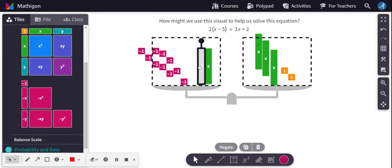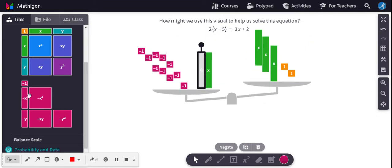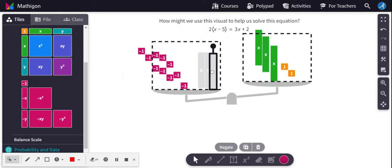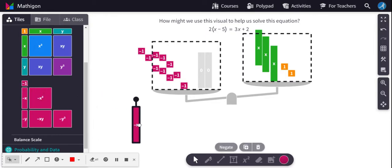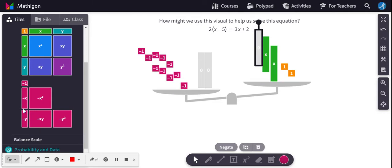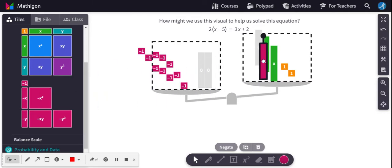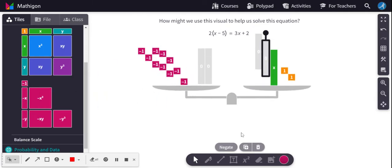I'm going to subtract not one, but two x tiles here, and that's going to zero those out. Now, of course, it's now out of balance. I need to get the scales tipped back. I need to zero out two over here to show that I'm removing two x tiles from each side. Now it's back in balance.